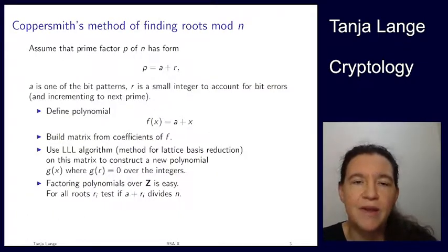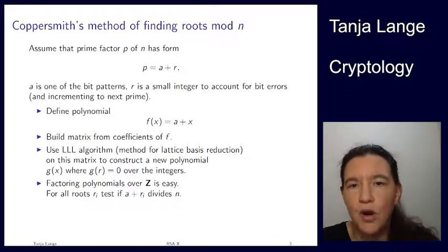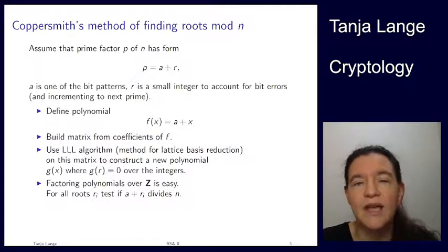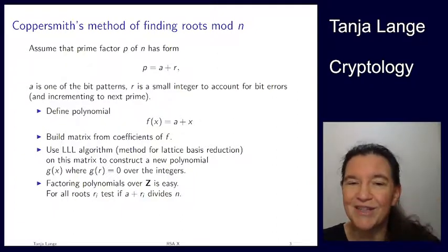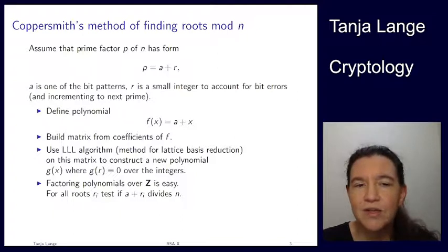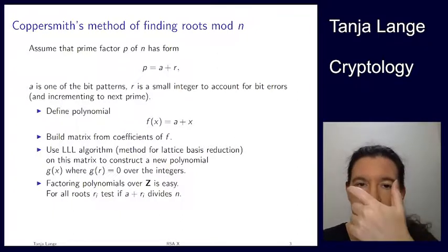Now Coppersmith's method finds roots of polynomials mod n. Keep in mind that I have proven for you that computing square roots mod n is hard, is as hard as factoring. We're looking here at polynomials mod n where n is an RSA modulus, so we don't know how to factor n. For the simplest polynomial, x squared minus c, where we would like to compute a square root of c, we do not know how to do this mod n. Now Coppersmith's method is able to compute roots mod n assuming that those roots are small, small in absolute value.